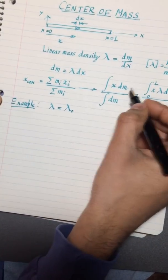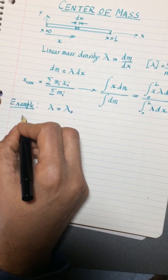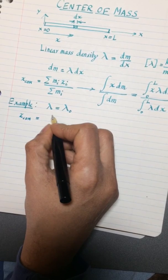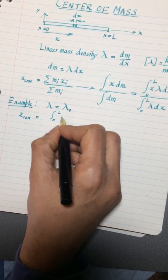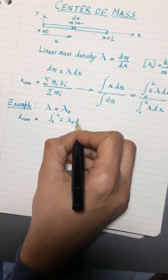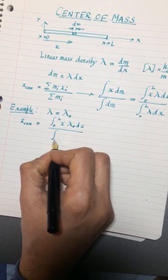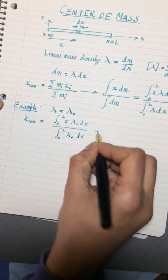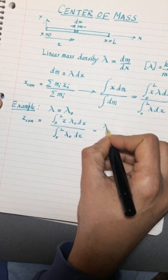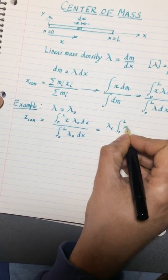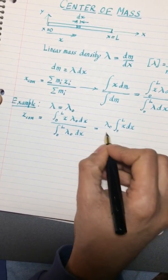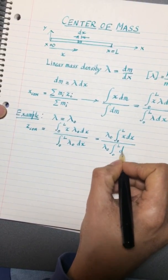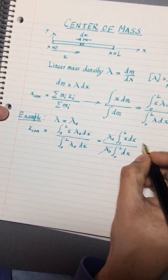If it's lambda naught it can be pulled out of the integral sign, so let's see what we get for the center of mass of this object. It's going to be the integral from 0 to L x times lambda naught dx divided by the integral from 0 to L of just lambda naught dx. I pull out the lambda naught and I get x dx.